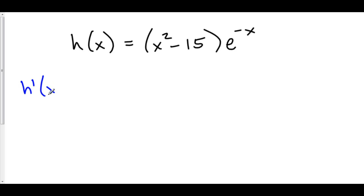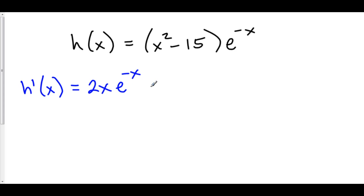The critical points are where h prime is equal to zero or does not exist. To find h prime, we have to use product rule because we have one function times another. The derivative of our first function is 2x times the second, e^(-x), plus the first, which is x² minus 15, times the derivative of the second. For the second we have to use chain rule.